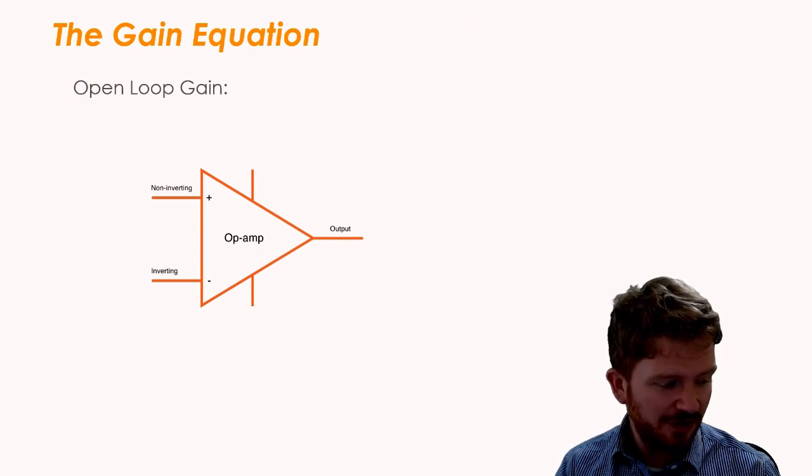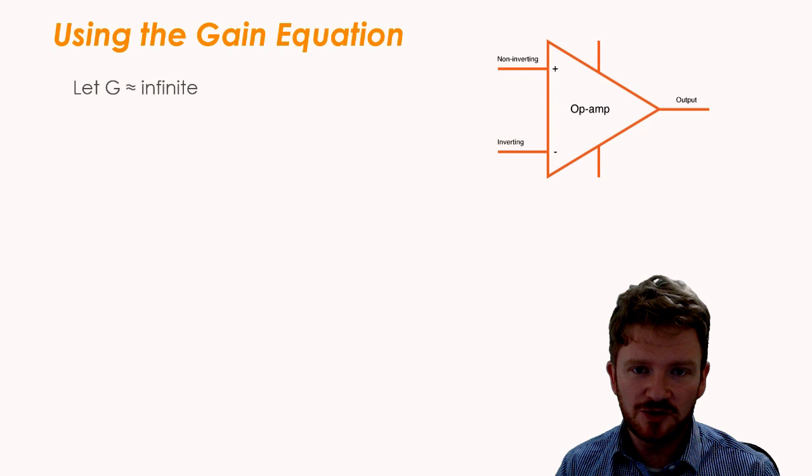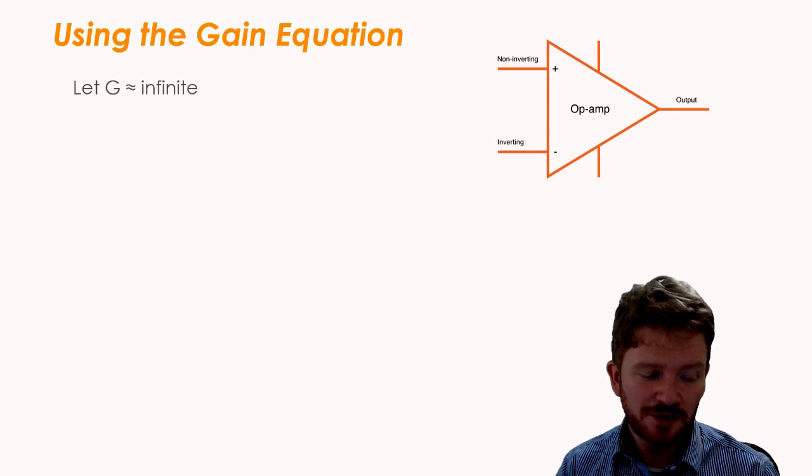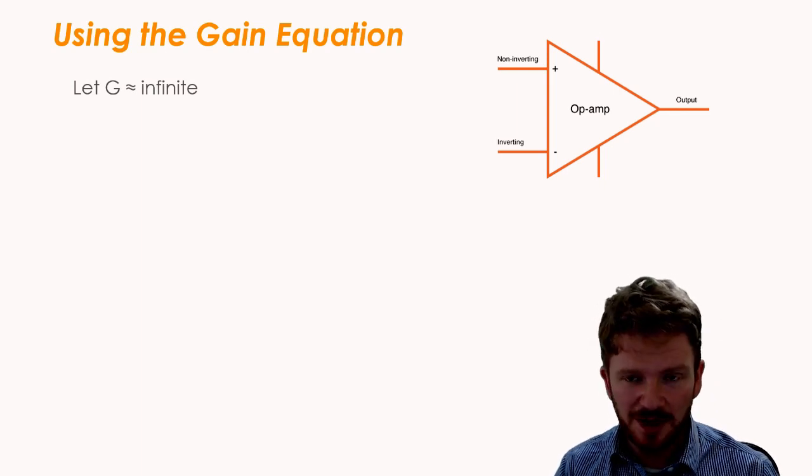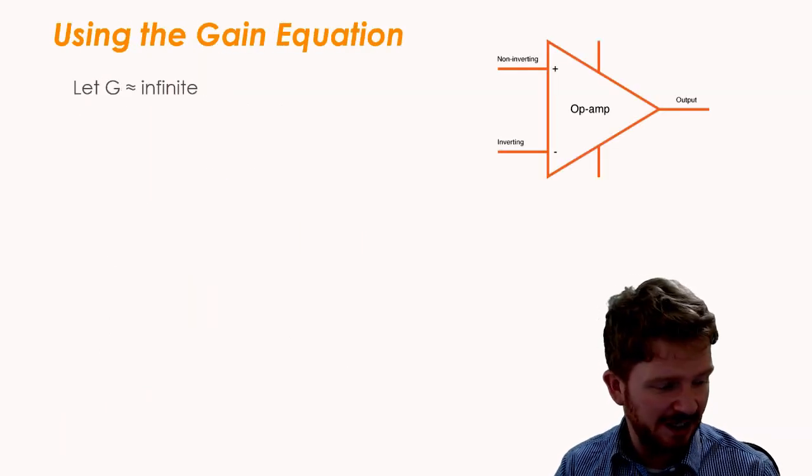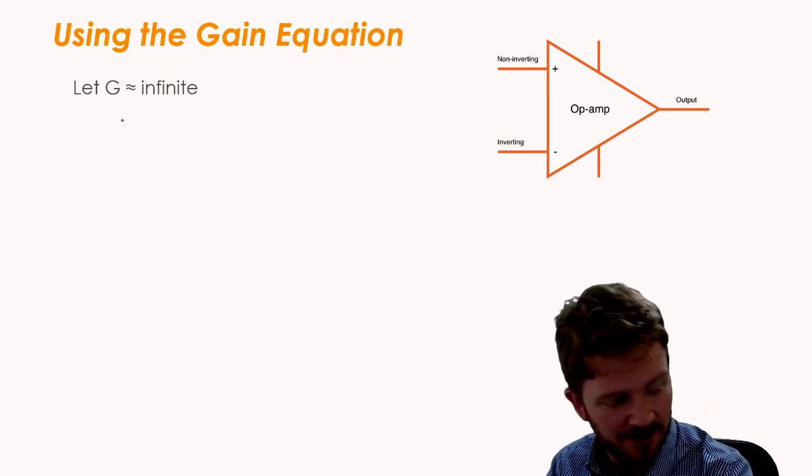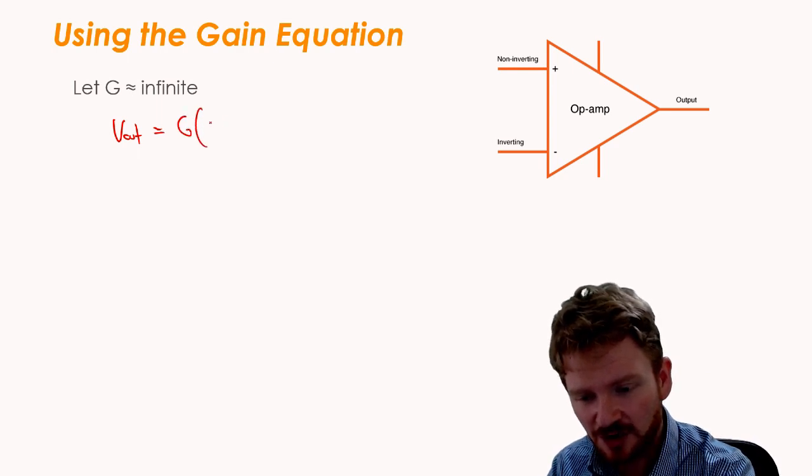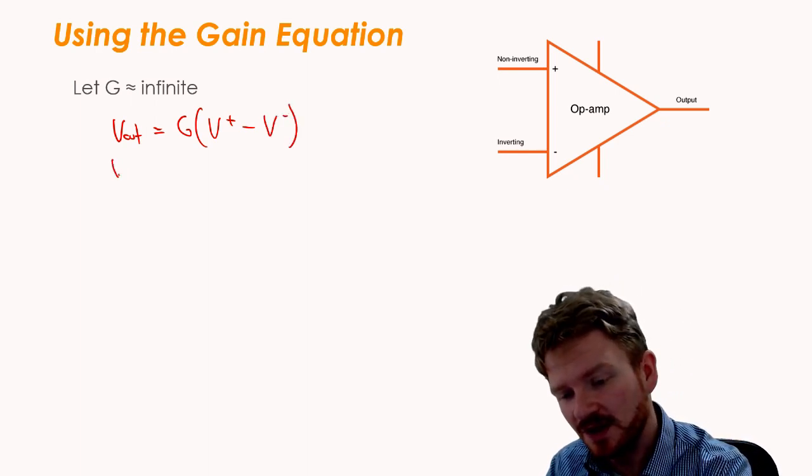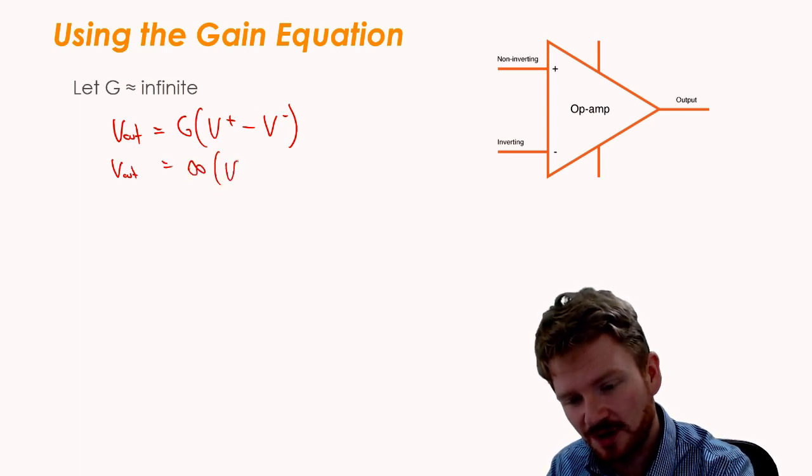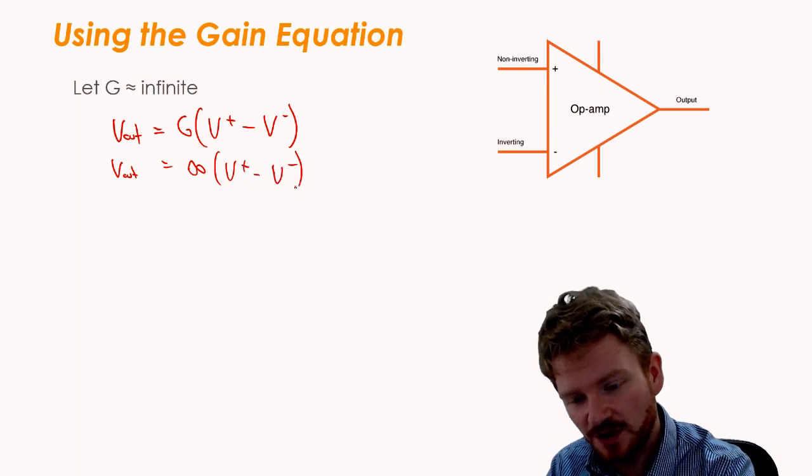Let's think a little bit about how we can use the gain equation, and where we can get something quite cool out of this. Let's say, back to our ideal op-amp, we said it has infinite gain. If it has infinite gain, then we can say that V_out, remember our general gain equation, is the gain multiplied by the non-inverting input, take away the inverting input. In this case, then, that becomes V_out is equal to infinity multiplied by V+, take away V-.